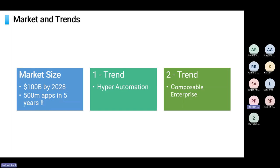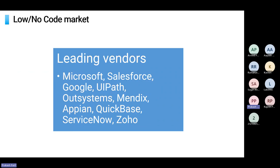Hyper-automation is a business-driven, disciplined approach that organizations use to rapidly identify, vet, and automate as many business and IT processes as possible through the orchestrated use of multiple technologies and tools. Composable enterprise is where a business uses technology to compose and recompose modular components to create adaptive custom applications for changing business needs. In terms of leading vendors, we see traditional players like Microsoft — with Power Platform at the forefront — Salesforce, and Google, as well as new players including Mendix, Appian, and QuickBase in different categories of the low-code application space.